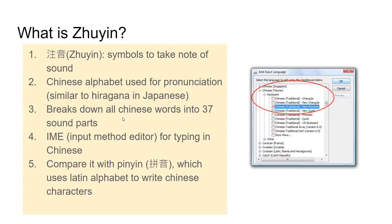Zhuyin is also an input method editor existing in your computer for typing in Chinese. It is denoted by the Chinese traditional new phonetic method. Compare this with Pinyin, which means you use the Latin alphabet to write Chinese characters.